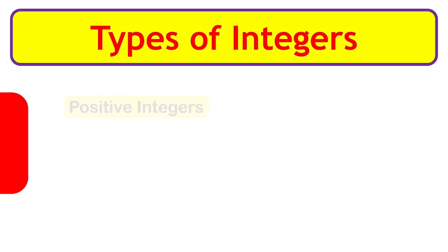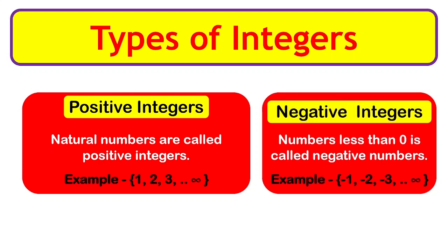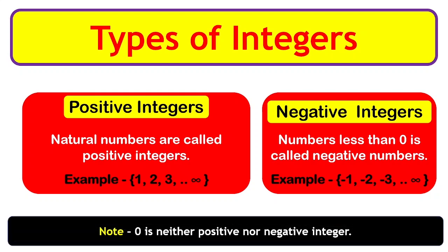Types of integers: there are two types — positive integers and negative integers. Positive integers are the natural numbers such as 1, 2, 3, etc. Negative integers are numbers less than zero, such as -1, -2, -3, etc. Note: 0 is neither a positive nor a negative integer.